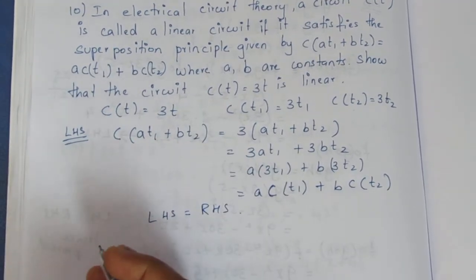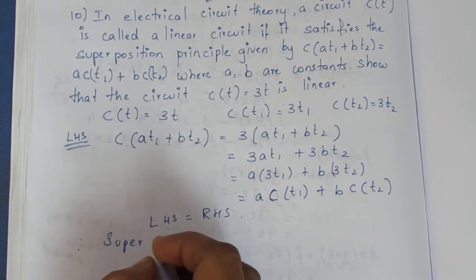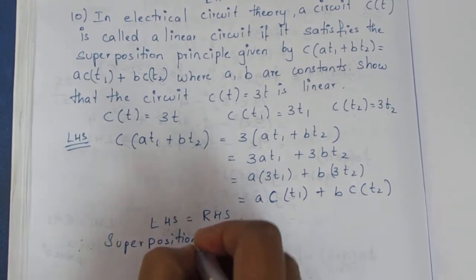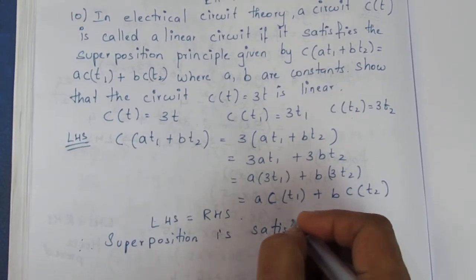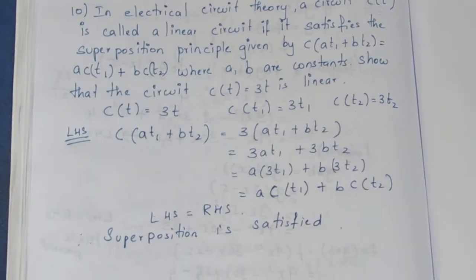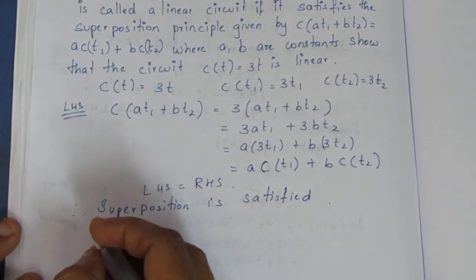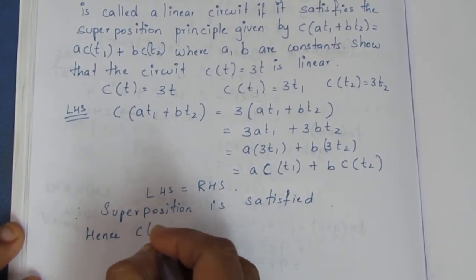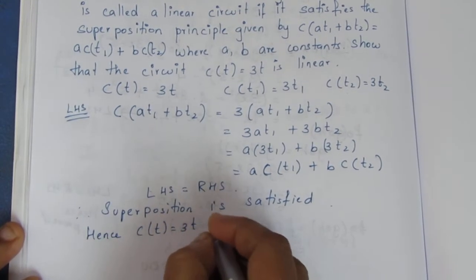Therefore, the superposition principle is satisfied. Hence, C of T equal to 3t is linear.